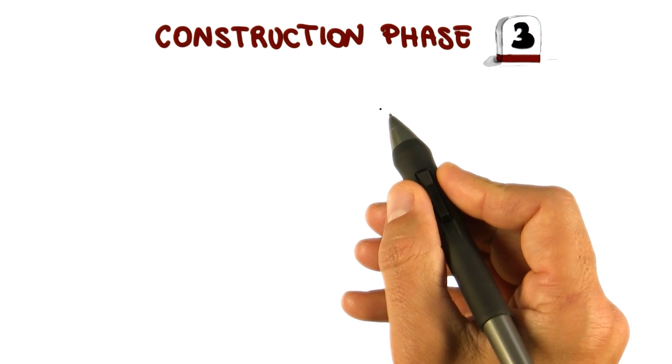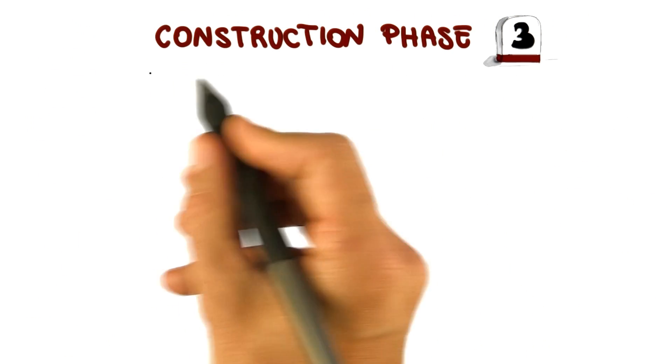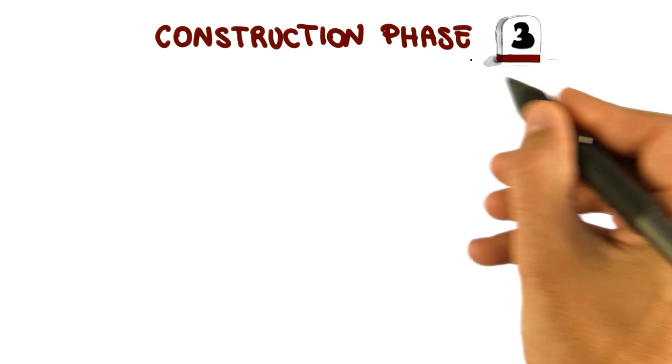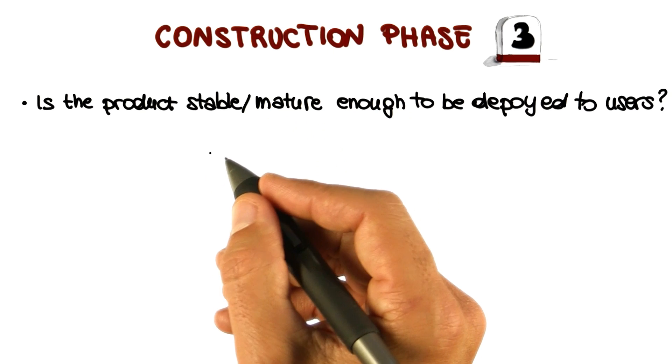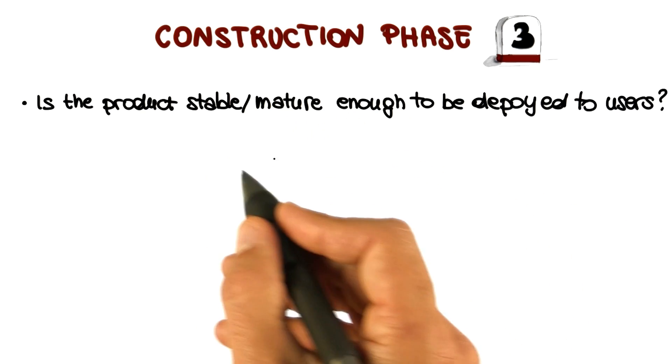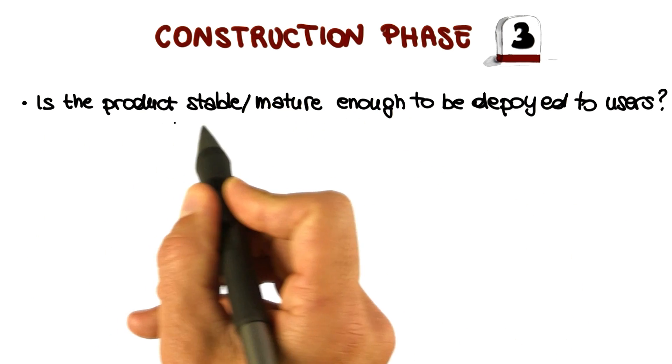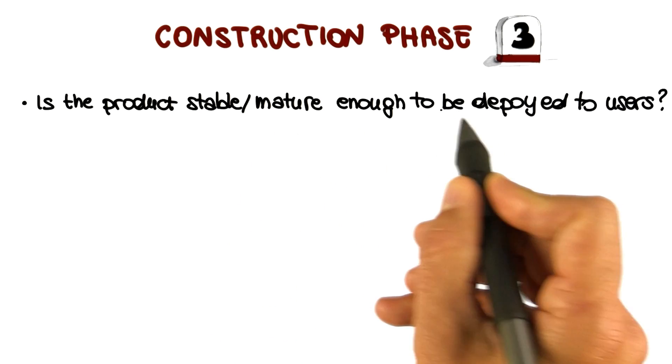So let's see also in this case, what are the evaluation criteria for the construction phase? How do we assess that this third milestone has been accomplished successfully? We pretty much have a complete product ready to be shipped. So the first question we want to ask is whether the product is stable and mature enough to be deployed to users. At the end of this phase, it has to be.